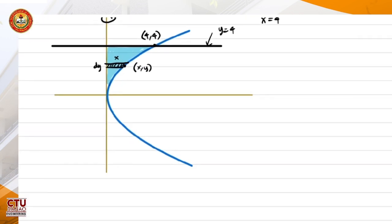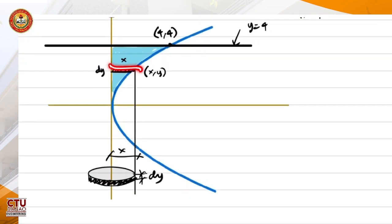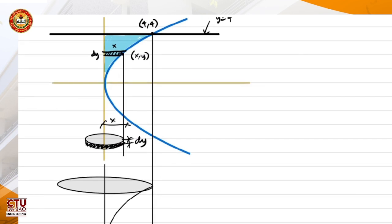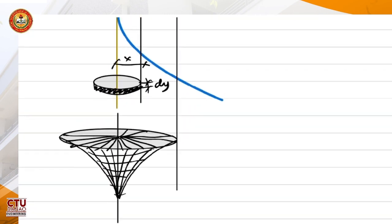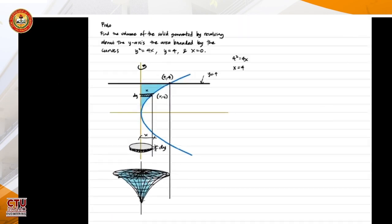Now, if we rotate the strip, it will generate this disc, a circular disc, with thickness dy and radius x. Because this is x, so this is also x. And if we integrate all the discs, it will generate a figure like this. So this would be the volume generated.